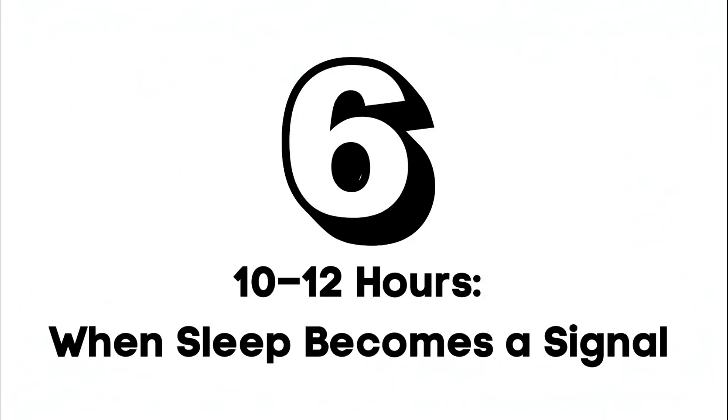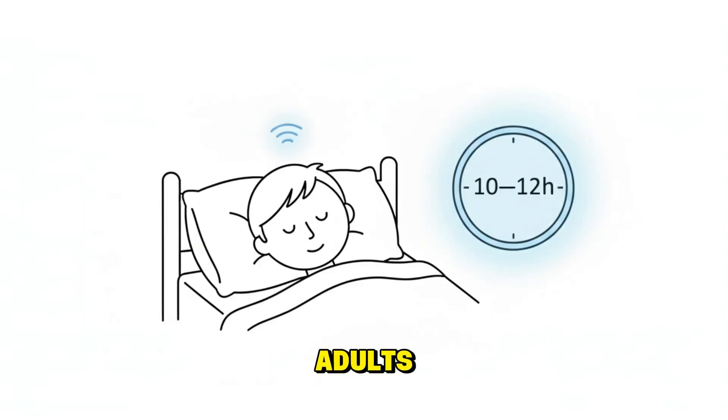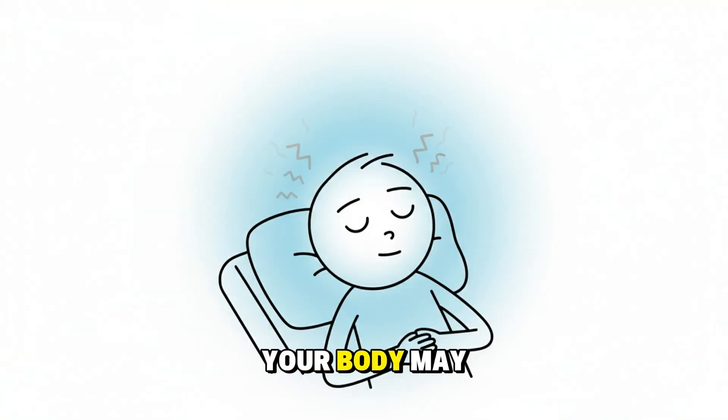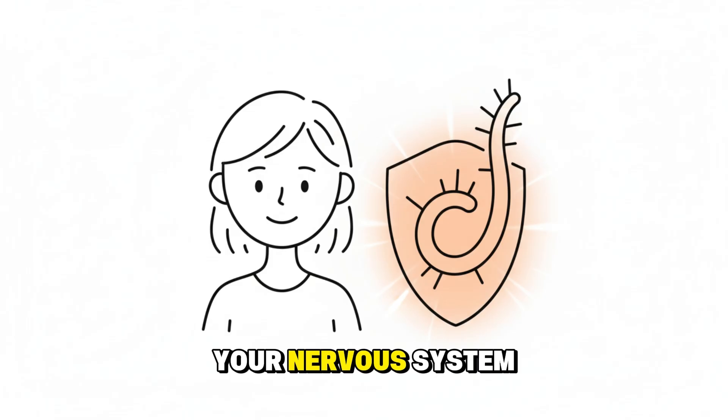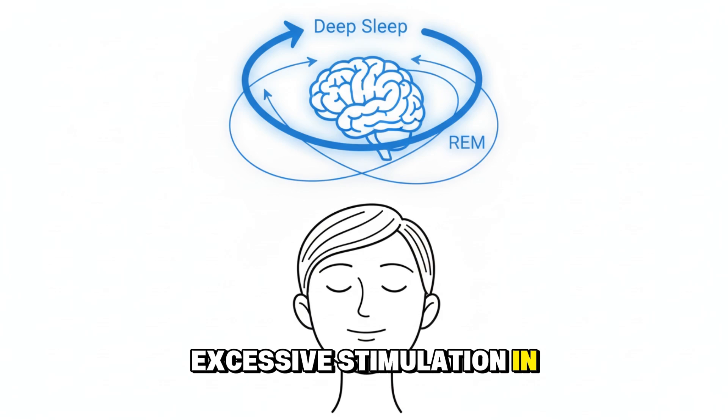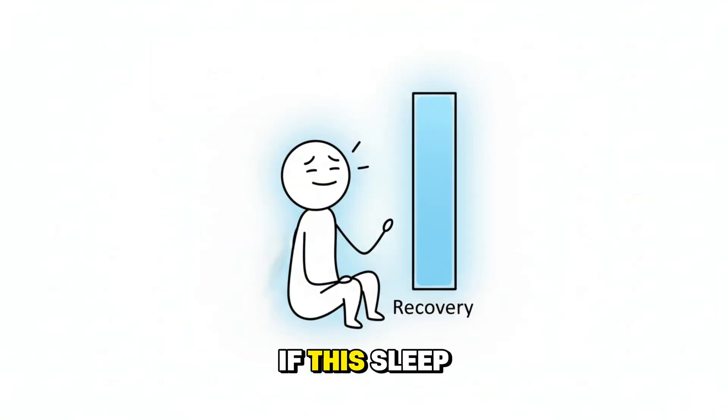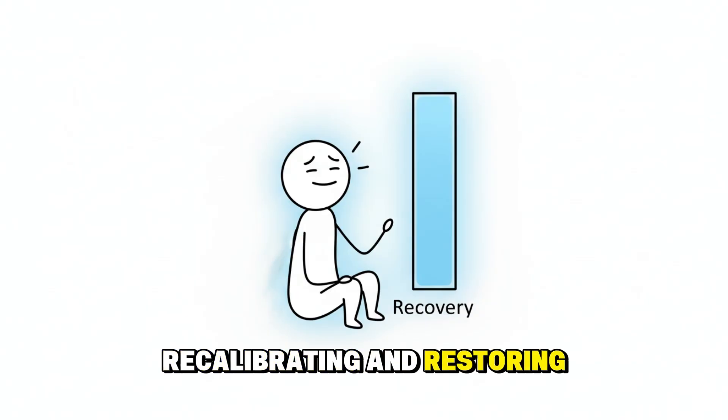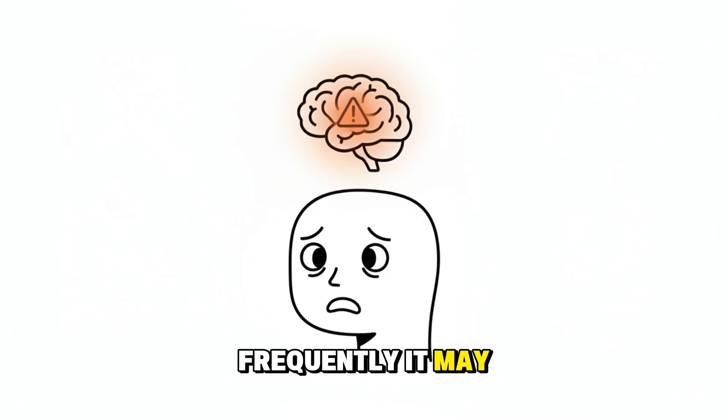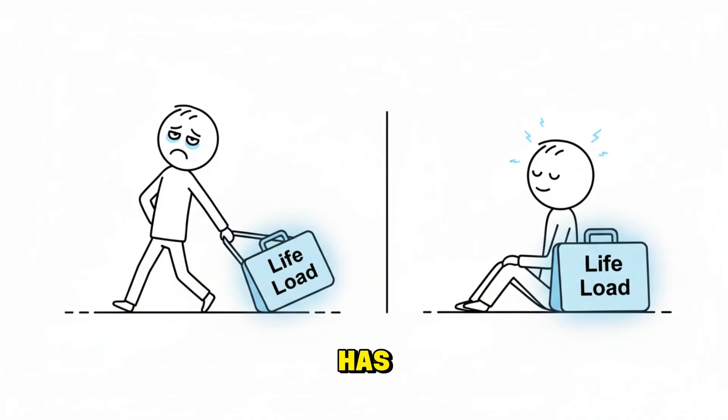Sixth, 10 to 12 hours of sleep is uncommon for adults, but when it happens, it often carries a message. Your mind may be healing from emotional overload. Your body may be catching up from significant stress. Your nervous system may be trying to protect itself from excessive stimulation. In this range, the brain enters prolonged deep sleep and extended REM cycles. This can help reorganize emotional memories and reduce accumulated stress. If this sleep duration happens occasionally, it is a sign of deep recovery. Your body is repairing, recalibrating, and restoring energy reserves. If it happens frequently, it may indicate that your mind or body is working through more strain than usual. Not a diagnosis, simply a signal to pay attention. The brain often asks for more rest when life has become heavier than we realize.